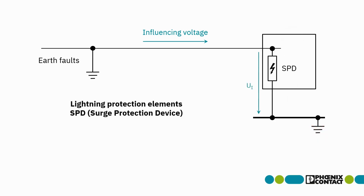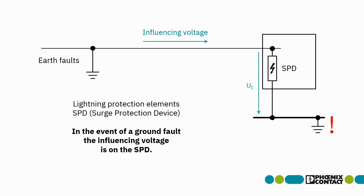Now we come to the effects on devices, for example lightning protection elements — in other words, SPD surge protection devices. SPDs must be earthed in order to function properly. This means that the influencing voltage is applied to the SPD in the event of an earth fault, and this must be taken into account when designing SPDs.